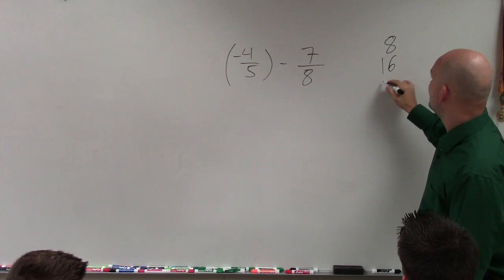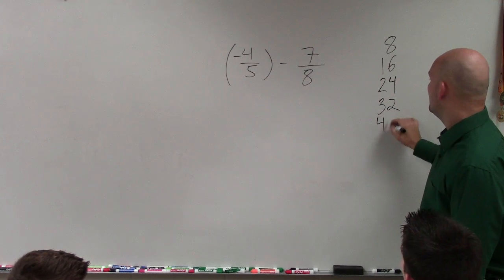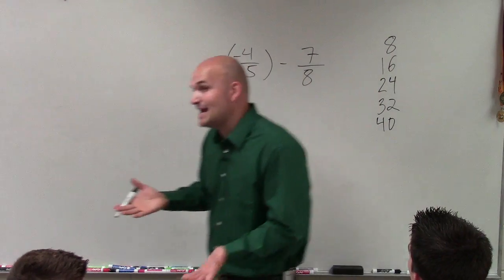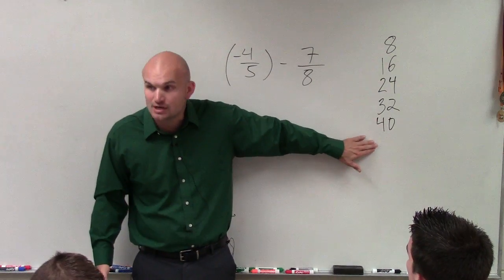And then 16, no, 5 doesn't divide into 16. 24, no. 32, no. 40. So guess what? 5 times 8 actually did give us the least common denominator. So 40 is our common denominator.